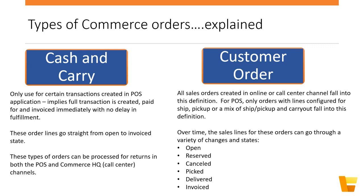To track the status of complex customer orders, the system relies on inventory transactions in Commerce Headquarters along with line statuses. These help determine whether an order is fully invoiced, partially back-ordered, or picked but not yet packed.